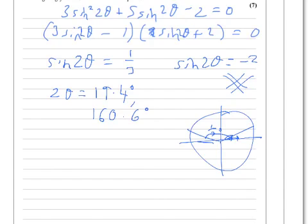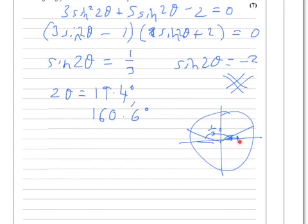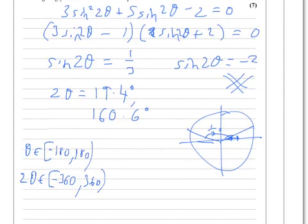Then there's another one by going 1 lap and a bit, but we don't really need to do that because in the question it said that theta is between minus 180 and plus 180. So 2 theta is in the range minus 360 to plus 360. So adding another 360 onto this won't give us a solution in this range. Adding 360 onto this won't either.